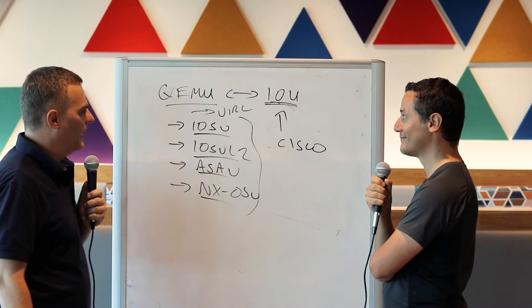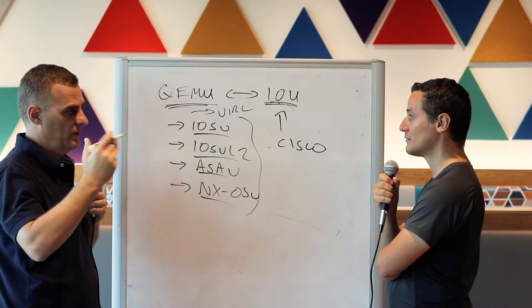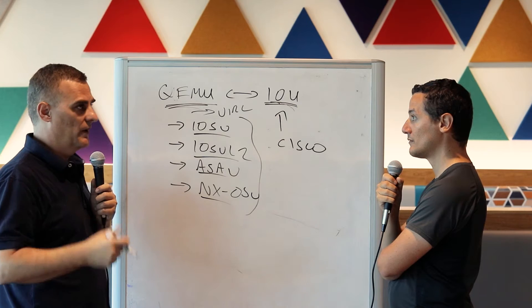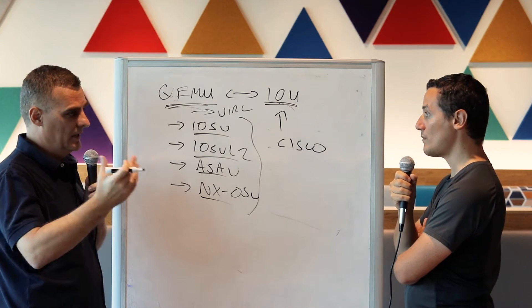Jeremy, I've seen this a lot when I download an appliance from the GNS3 marketplace. I go into GNS3's website and I go to the marketplace appliances and I download an appliance. A lot of those appliances are QEMU appliances, aren't they?